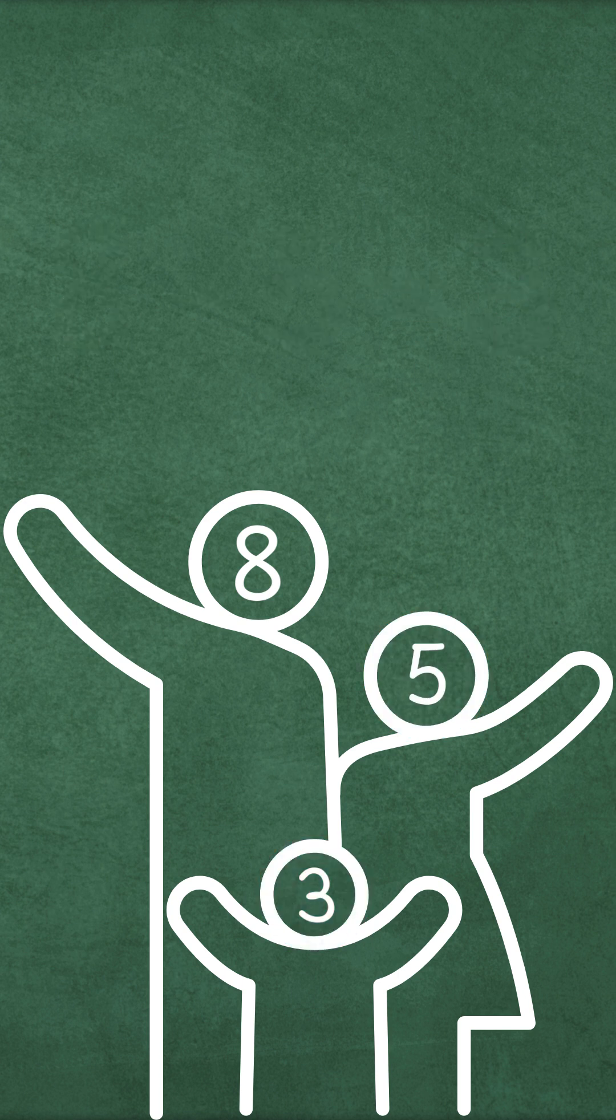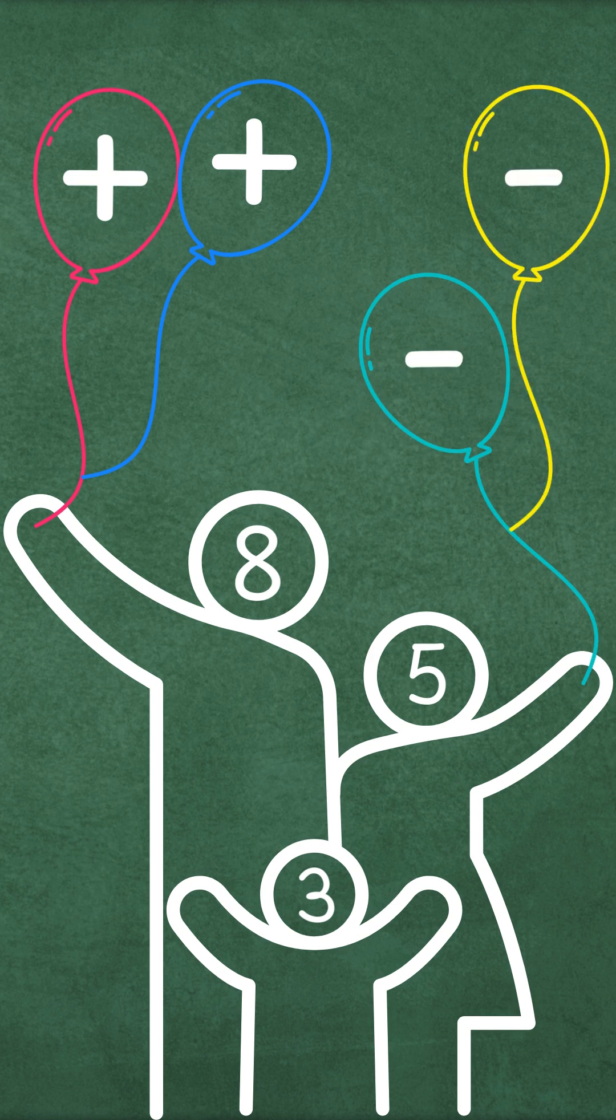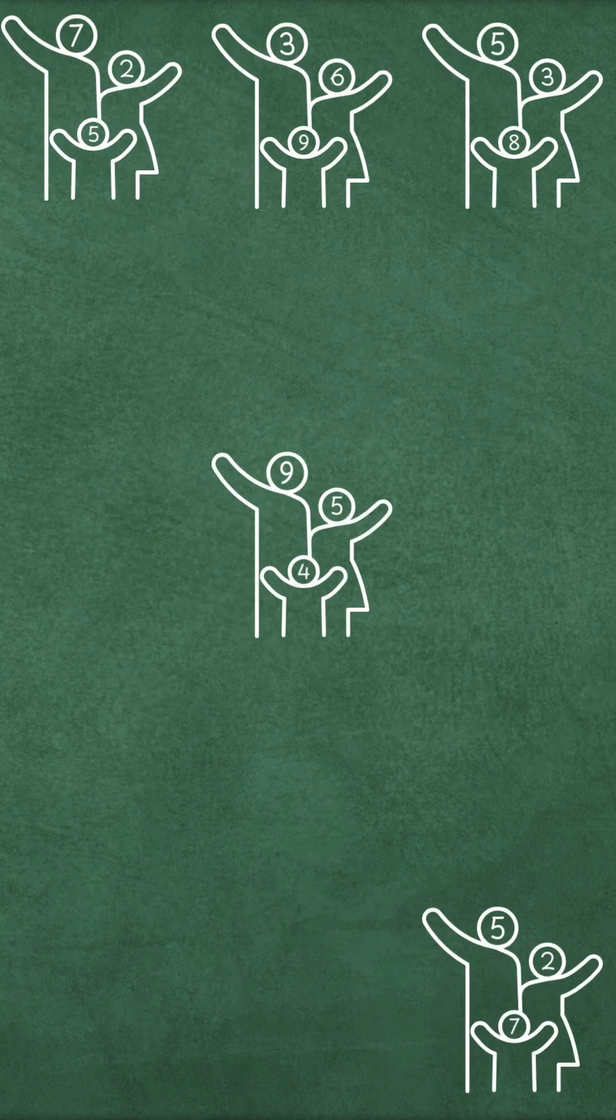So every fact family gives us 2 addition facts and 2 subtraction facts. And guess what? There are lots of fact families in math.